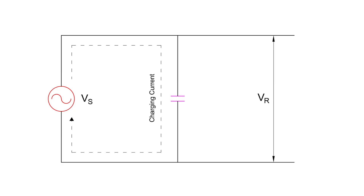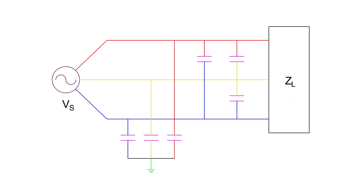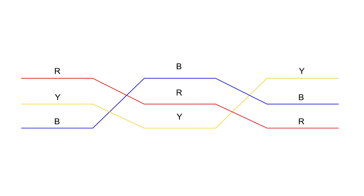When an alternating voltage is applied, the charge on the conductors keeps increasing and decreasing with every cycle, leading to a current known as the charging current. This charging current flows even when the line is open at the load end — in other words, even if no power is being supplied to consumers, the line still draws current. In a single-phase line, capacitance is calculated between the two conductors; in a three-phase line, we calculate the capacitance of each conductor with respect to neutral. If spacing is symmetrical the capacitances are equal; if not, transposition is used to equalize the average capacitance.